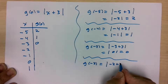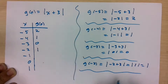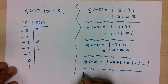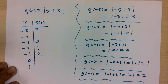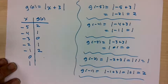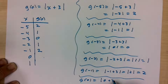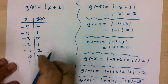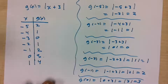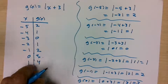g of negative 2 is absolute value of negative 2 plus 3, which is absolute value of 1, which is 1. g of negative 1 is absolute value of negative 1 plus 3, giving absolute value of 2, which is 2. g of 0 is absolute value of 0 plus 3, which is 3. And g of 1: 1 plus 3 is 4, absolute value of 4 is 4. So the points are: (negative 5, 2), (negative 4, 1), (negative 3, 0), (negative 2, 1), (negative 1, 2), (0, 3), (1, 4).